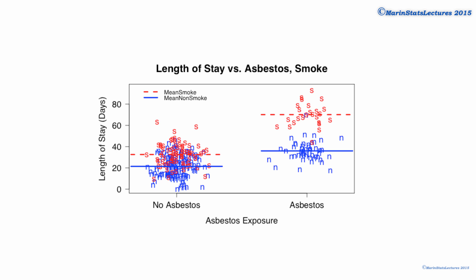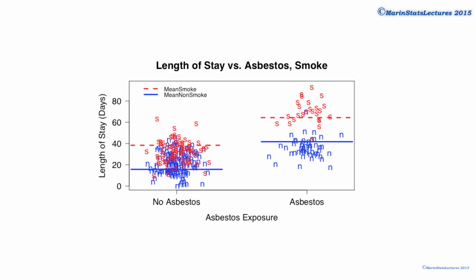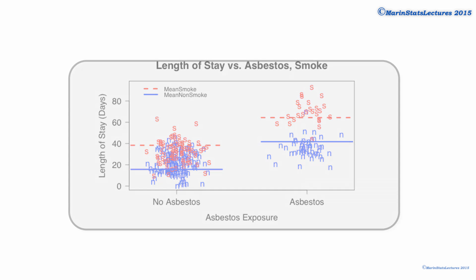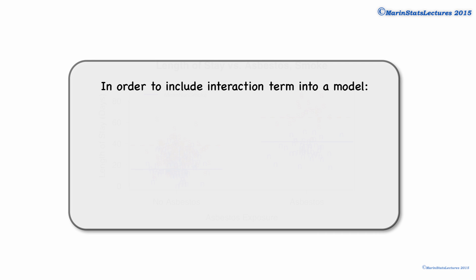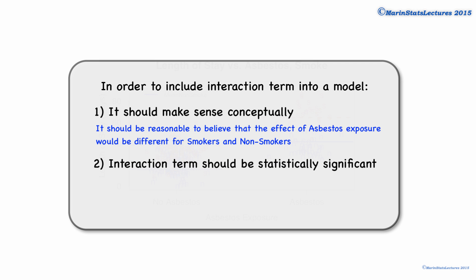For the sake of comparing and contrasting, let's take a quick look at what a model that does not include interaction would look like. No interaction suggests that the effect of smoking is the same for those who are exposed to asbestos and those who are not. No interaction also suggests that the effect of asbestos exposure is the same for smokers and for non-smokers — the same concept as parallel lines discussed in previous videos. In order to include an interaction term in our model, the interaction term should satisfy a few things. First, it should make sense conceptually — it should be reasonable to believe that the effect of asbestos exposure would be different for smokers and non-smokers. The interaction term should also be statistically significant, which can be judged by the p-value of the interaction term, confidence interval, or other forms of significance tests.